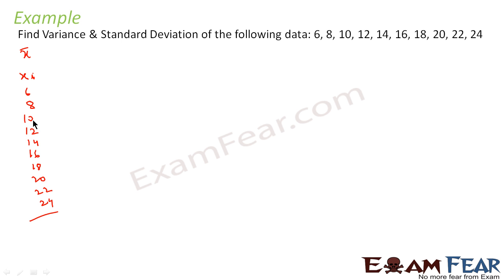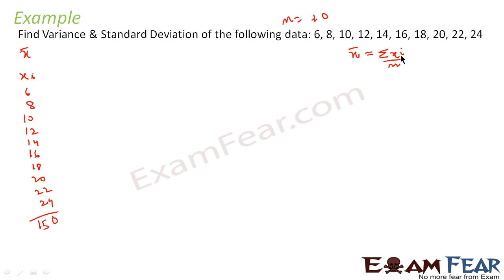Adding all xi values: 6 + 8 = 14, + 10 = 24... the summation of all xi is 150. The number of terms n is 10. So the mean is summation of xi by n, which is 150 by 10, giving mean = 15.